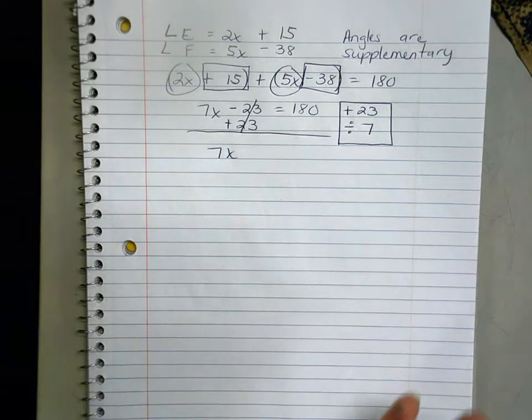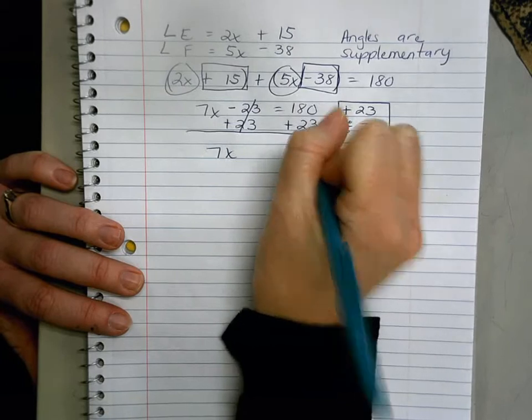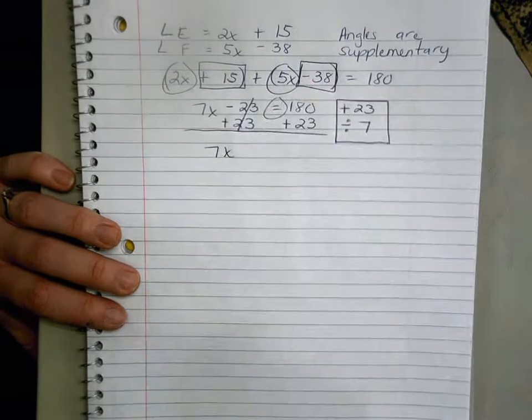But in algebra we want to always balance our equation, so we're gonna add 23 to both sides. What you do to one side of the equation you have to do to the other side of the equation to respect that equal sign.